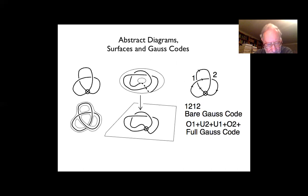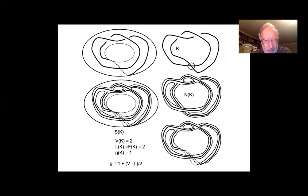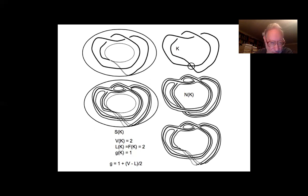That gives you the ribbon surface and the abstract link diagram. Filling in the boundaries with disks gives a least-genus surface for the diagram, on which the virtual knot is realized as a knot in the thickened surface. Virtual diagrams can be regarded as representing knots in thickened surfaces. The surface genus can change under moves — one way to understand this is to form a neighborhood of the knot in the surface and cut it out, possibly throwing away genus beyond the neighborhood.